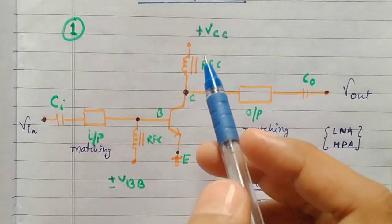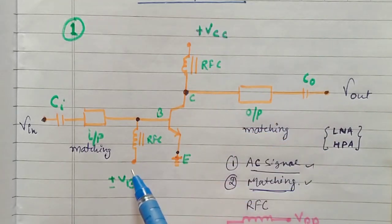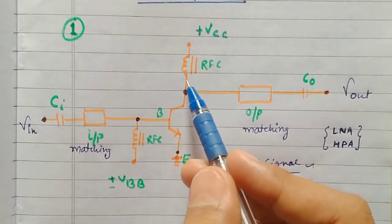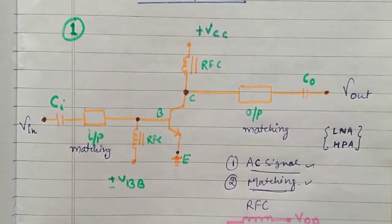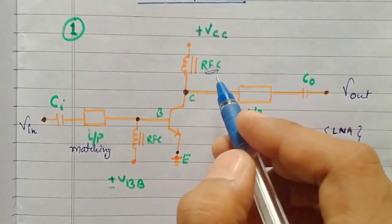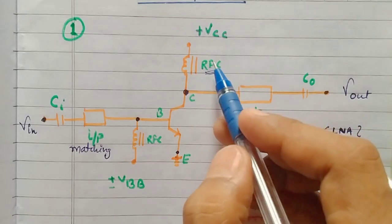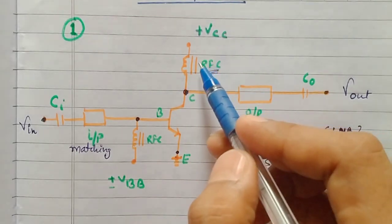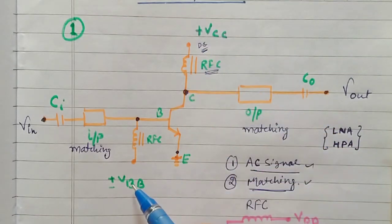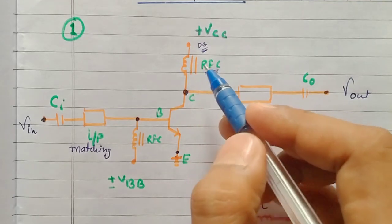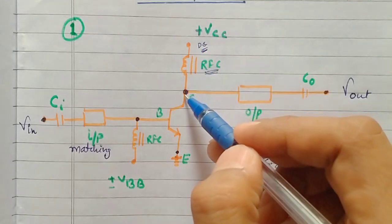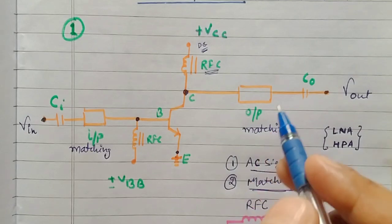An important parameter is preventing AC signal from entering the DC supply. To operate the transistor we must design a DC biasing circuit. When applying DC through the collector or base terminal, we use an inductor — an RFC (radio frequency choke). The inductance value depends on the operating frequency of the RF circuitry. The RFC stops the AC signal so that only DC gets coupled to the collector terminal and to the base terminal.